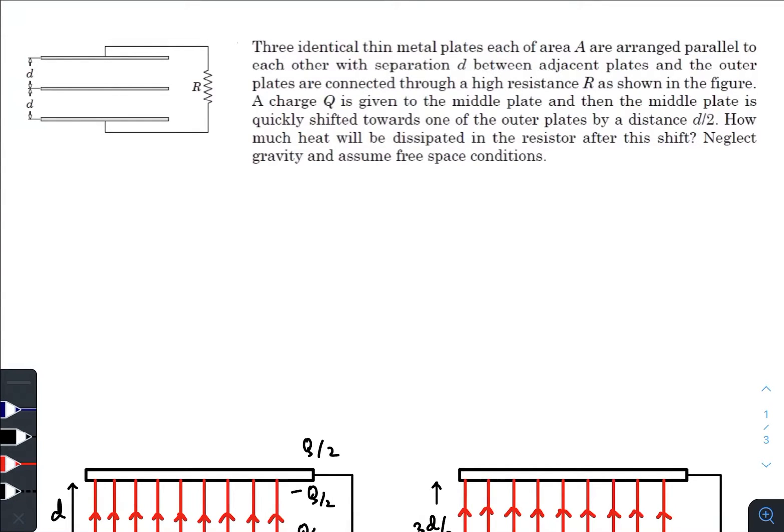Hey, what is up everyone? I hope all of you are doing great. In today's question we have three identical thin metal plates, each of area A, arranged parallel to each other with separation D between adjacent plates, and the outer plates are connected through a high resistance capital R as shown in the figure.